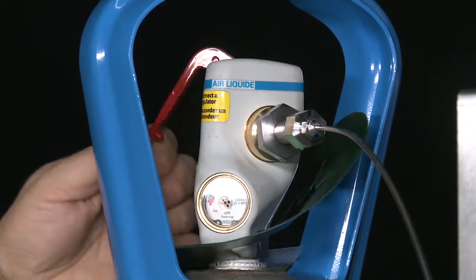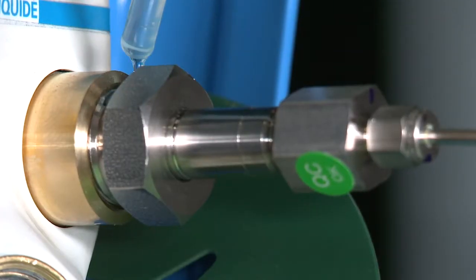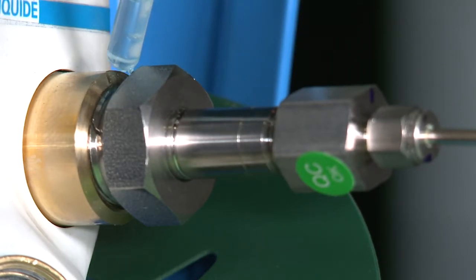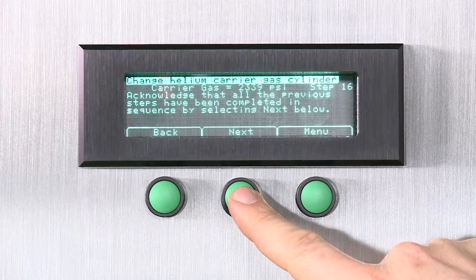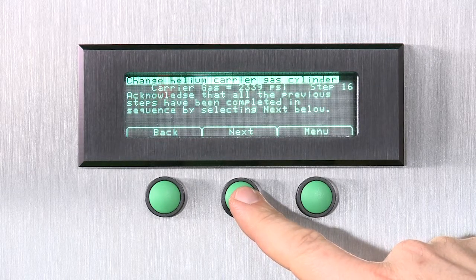Open the shut-off valve on the cylinder. Use Snoop Liquid to check for leaks at the gas fitting on the cylinder. Acknowledge that all the previous steps have been completed in sequence by selecting Next.